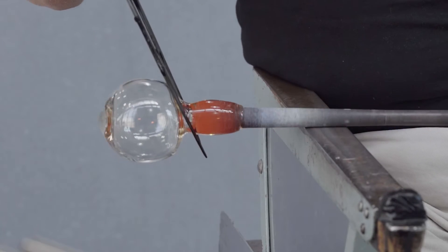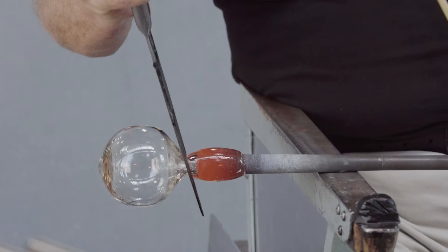This is the constriction that will enable me to separate the bubble from the blowpipe at the end of the process.